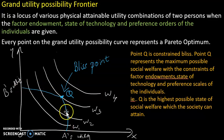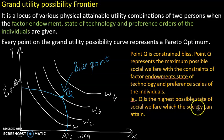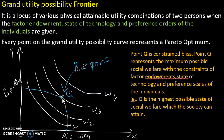Point Q is the constraint bliss. It represents the maximum possible social welfare subject to the constraints of factor endowments, state of technology, and preference scales of individuals. Q is the highest possible state of social welfare which the society can attain. Thank you, have a nice day, God bless you — subscribe, share, and like.